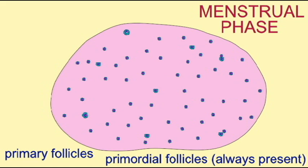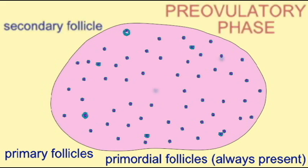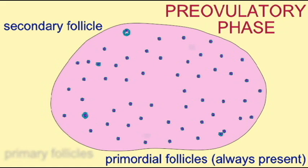They will become primary follicles, and the primary follicle which grows largest and fastest will become typically the only secondary follicle to develop in any one menstrual cycle.